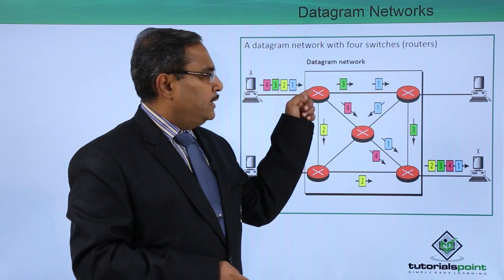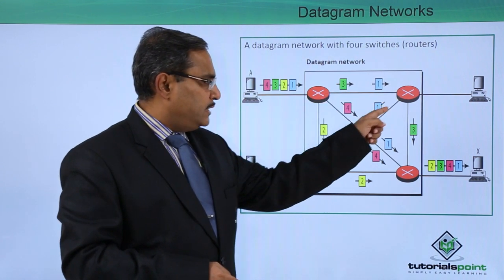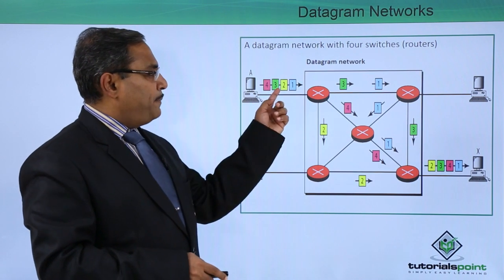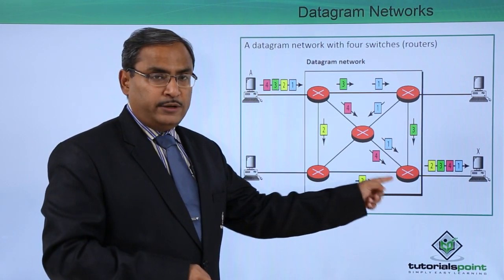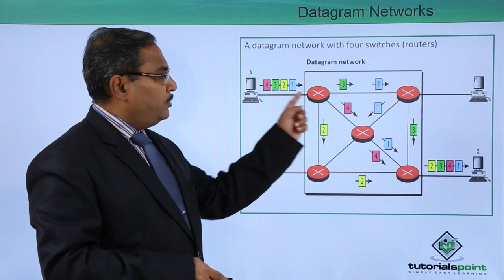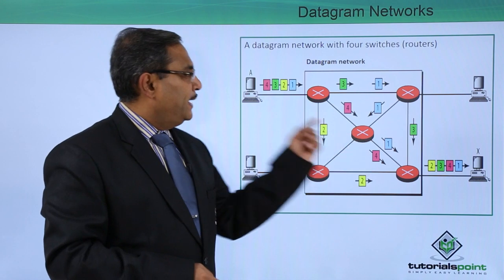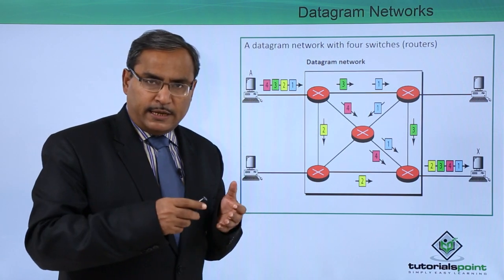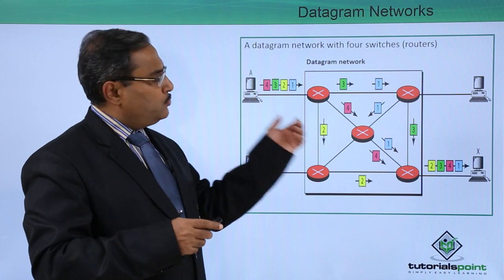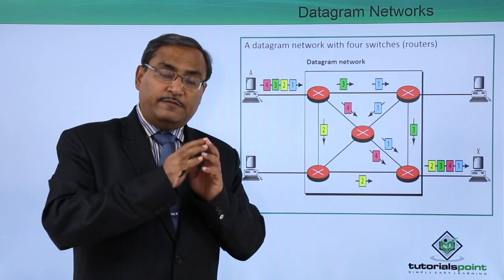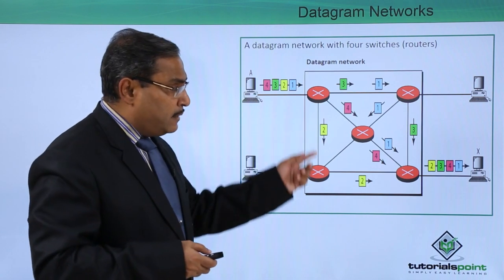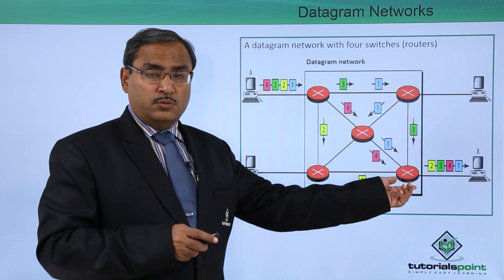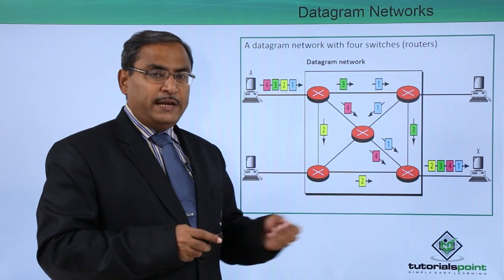Packet number one is going this way, traversing three edges. Packet number two traverses two edges. Packet number three traverses its own path, and packet number four also traverses differently. So we find that these four packets are traversing different routes while going from the sender to the receiver. Because they are traversing different routes, different packets will reach the destination at different times.